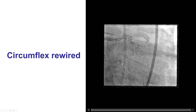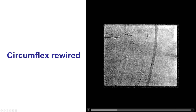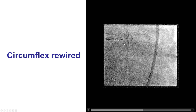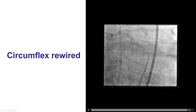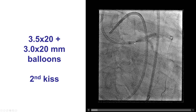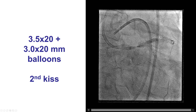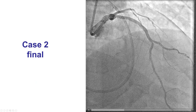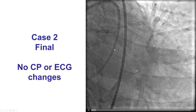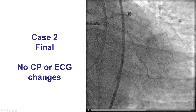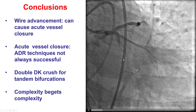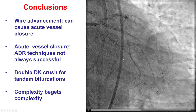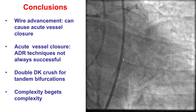After proximal optimization, we rewired into the circumflex, which was a little tricky. The second rewiring is best done through a distal strut, as happened in this case. We then did the second kissing balloon inflation for the left main bifurcation, with a 3.5 mm balloon into the LAD and a 3.0 mm balloon into the circumflex. This provided a nice result in the left main and LAD, as well as the proximal circumflex and obtuse marginal branch. We still had very poor flow into the distal circumflex, but the patient was feeling well without chest pain or EKG changes, so we decided to let it be. He had an uneventful post-procedural course, with a plan to return for a repeat procedure in the circumflex.